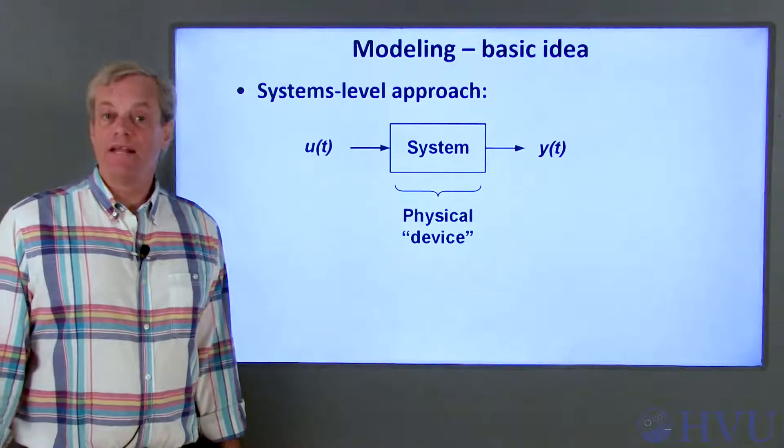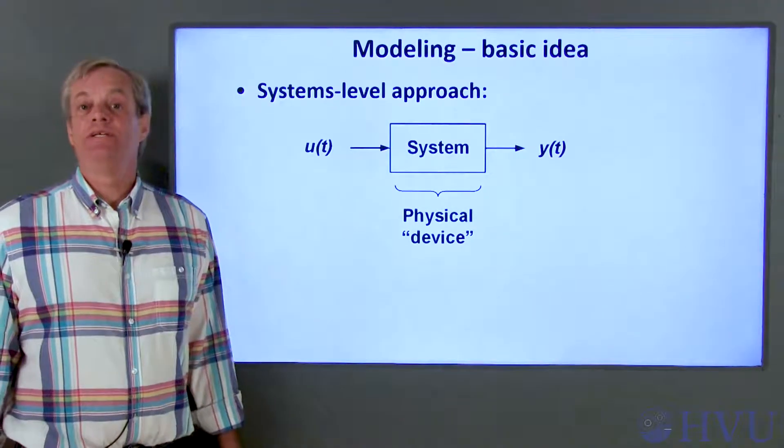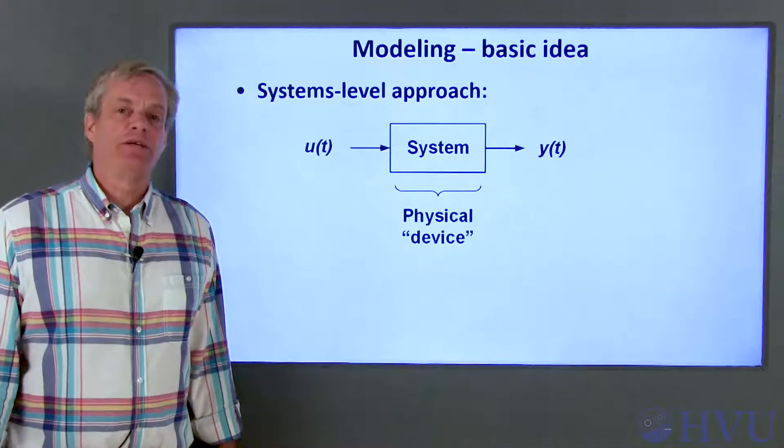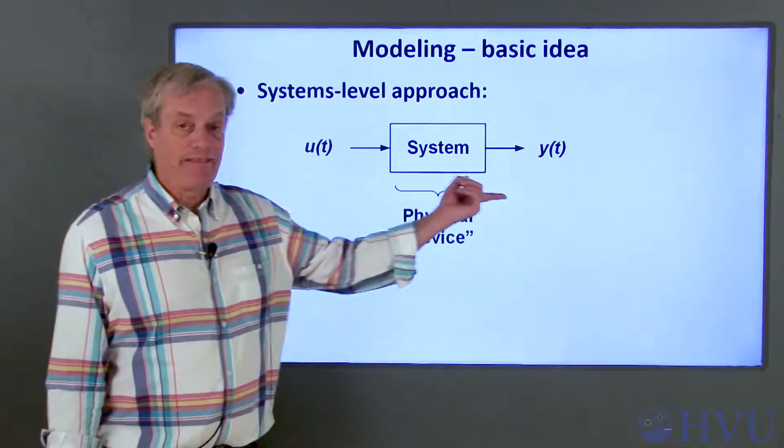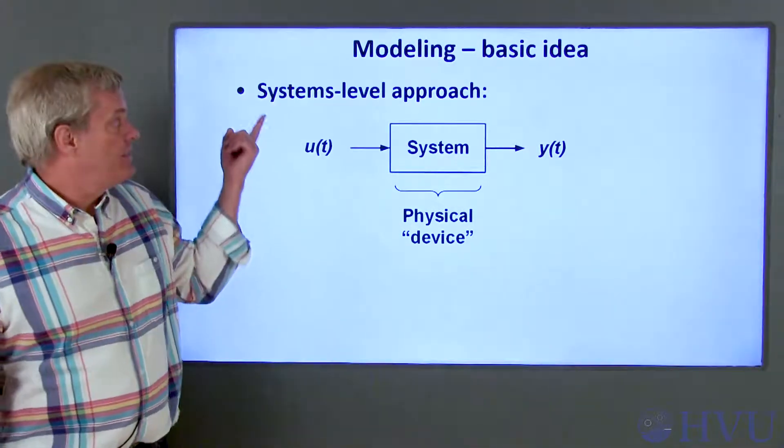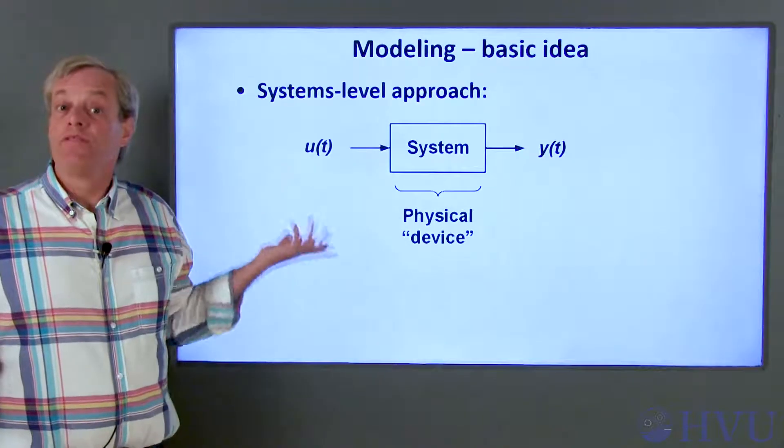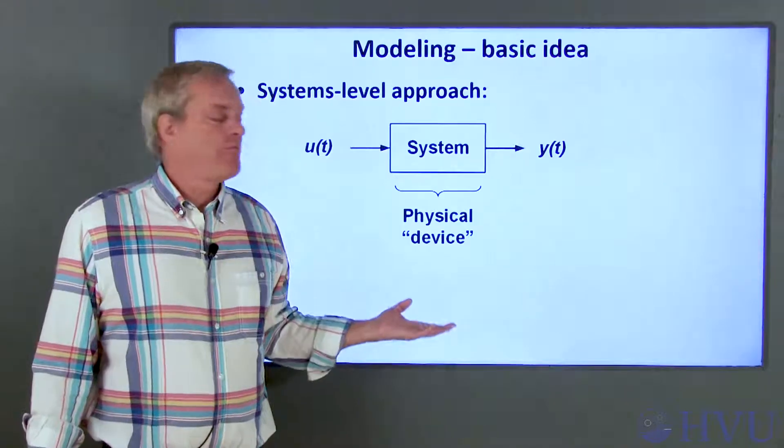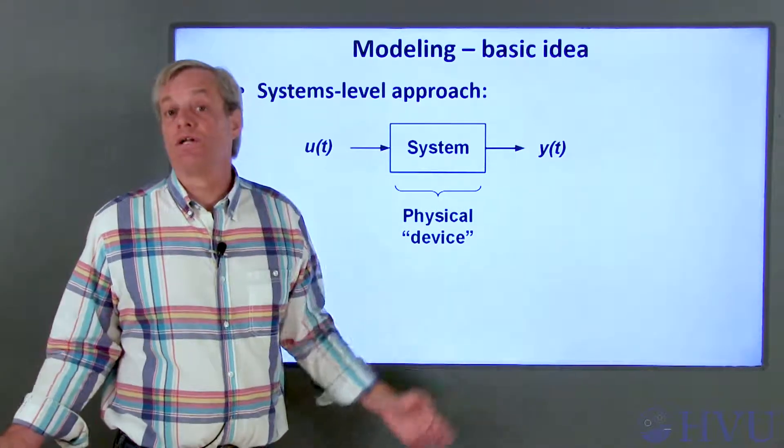Mathematical modeling is the process of creating mathematical equations that predict the behavior of a physical system. It's generally explained in terms of block diagrams like this. This is called a systems level approach. The block represents a system, which is just a generic term for some physical device or a collection of devices.